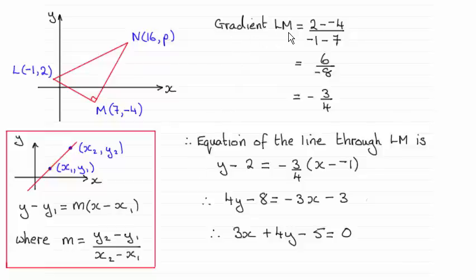So I've started off then with the gradient LM as being the difference in the Y coordinates, 2 minus minus 4, divided by the difference in the X coordinates, minus 1 minus 7.